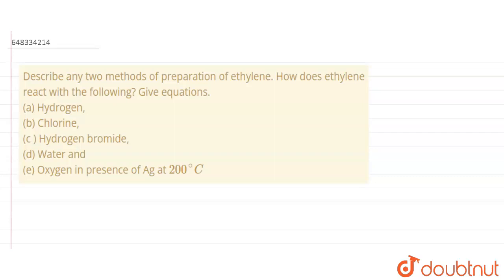Here we have the question: describe any two methods of preparation of ethylene. How does ethylene react with the following — give equations: (a) hydrogen, (b) chlorine, (c) hydrogen bromide, (d) water, and (e) oxygen in the presence of silver at 200 degrees Celsius. So first of all, let's look at the preparation methods of ethylene.